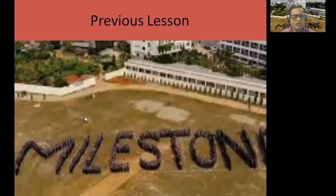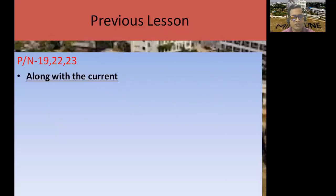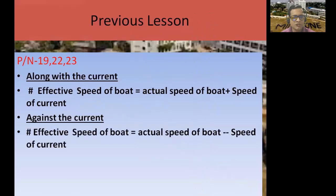In the previous lesson you already solved question numbers 19, 22, and 23. Now I will show you the formulas for this chapter. The effective speed of a boat with the current equals the actual speed of the boat plus the speed of the current. Against the current, the effective speed of the boat equals the actual speed of the boat minus the speed of the current. You need to memorize these formulas.